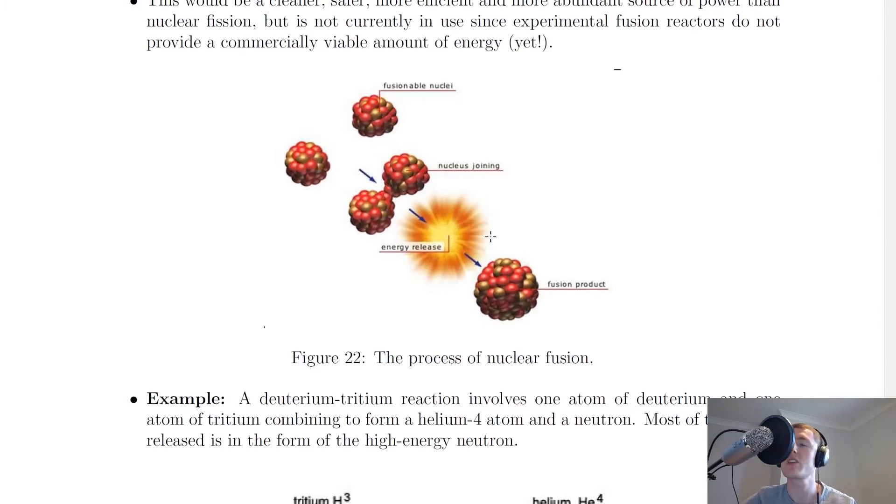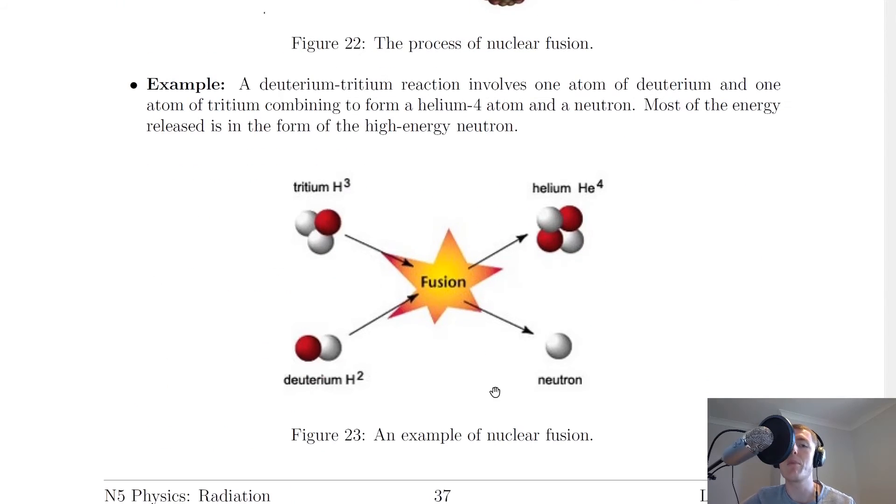Here's a picture of the nuclear fusion process, just like the animation I showed you. You've got two lighter nuclei which are going to fuse together, and when they combine they've formed a larger heavier nucleus with the release of energy.